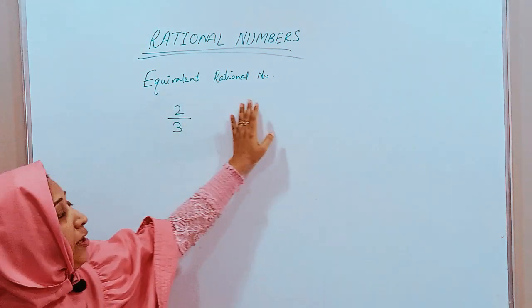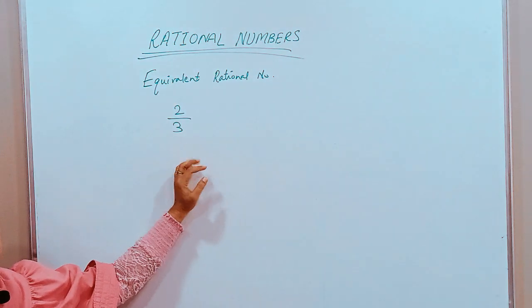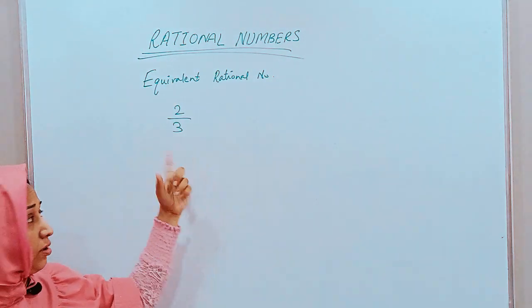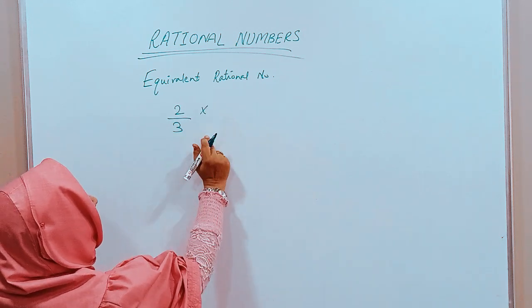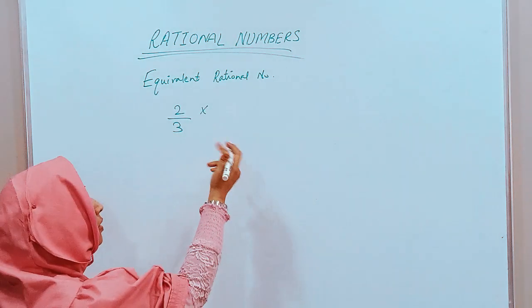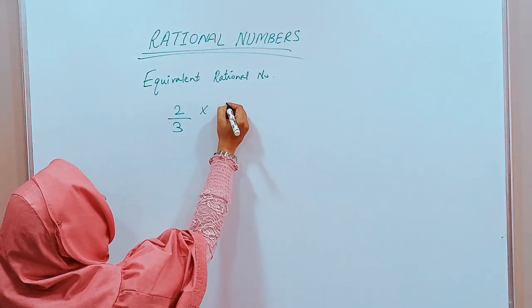To find equivalent rational numbers, we can find as many equivalent rational numbers to a given number as we want. What we have to do, we will multiply this number, numerator and denominator, with any number we wish. For example, I multiply it by 5.